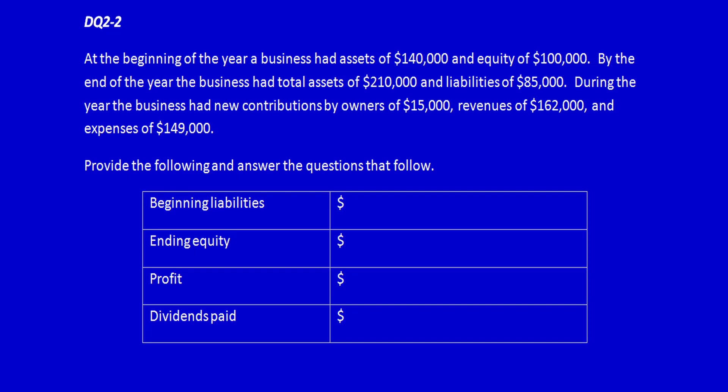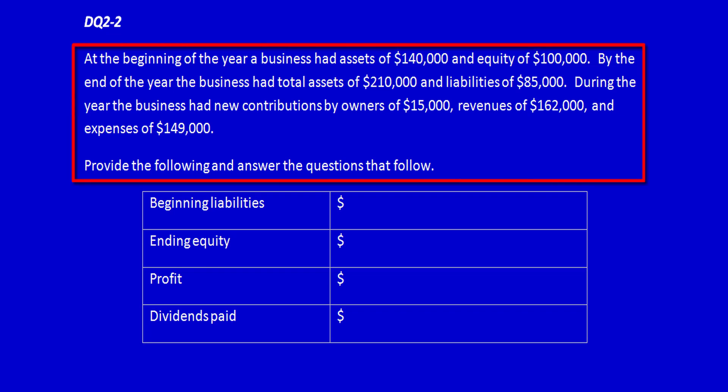Demonstration Question 2-2 asks us to solve for unknown numbers in a far more complex way. At the beginning of the year, a business had assets of $140,000 and equity of $100,000. By the end of the year, it had total assets of $210,000 and liabilities of $85,000. During the year, the business had new contributions by owners of $15,000, revenues of $162,000, and expenses of $149,000. We need to provide and answer the questions that follow.